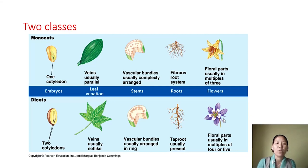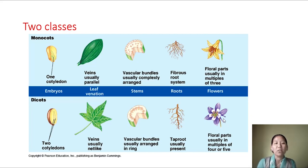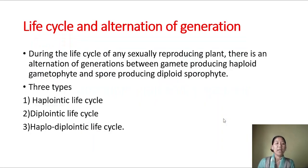Angiosperms are the flowering plants that produce flowers where gametes are produced on the gametophyte, and the gametophyte does not have independent existence - it is present on the sporophytic plant body. Angiosperms are grouped into monocots and dicots, and we can distinguish between them by looking at the cotyledon in the seed, leaf venation, cross section of stem or root, and by counting the floral parts.